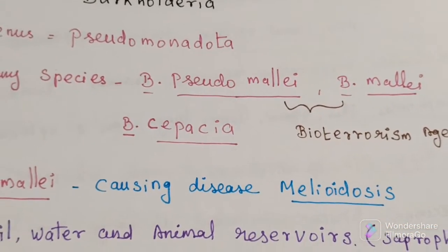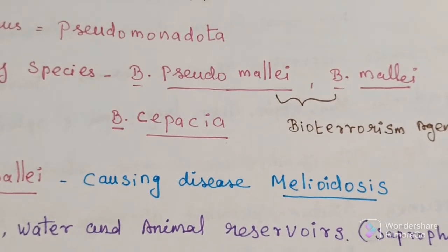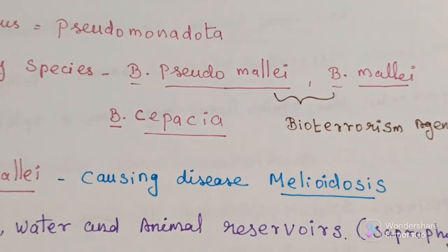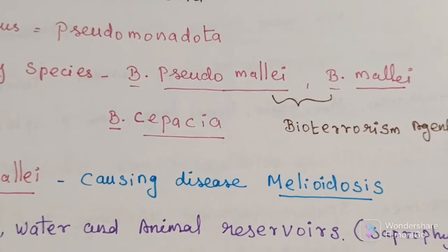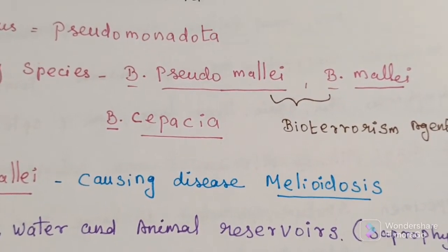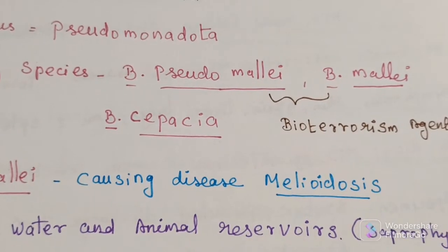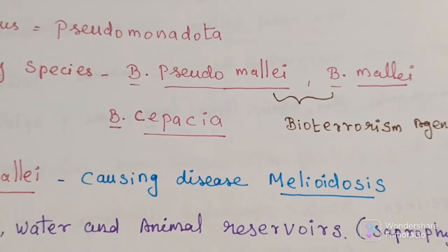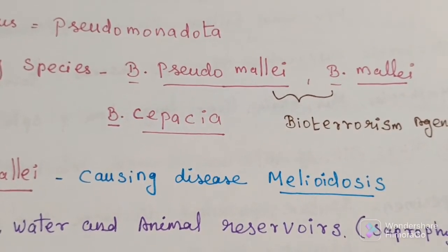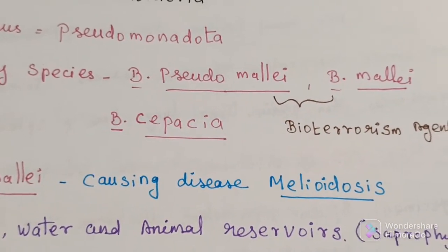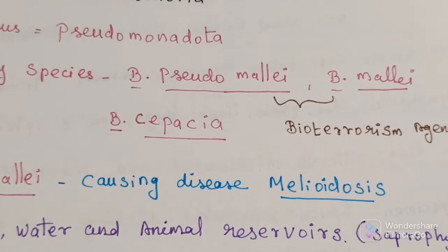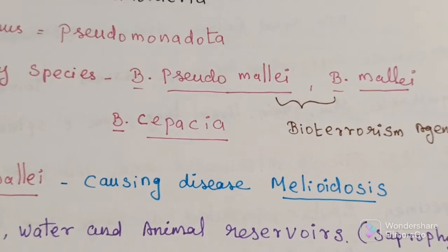The three important species are Burkholderia pseudomallei, Burkholderia mallei, and Burkholderia cepacia. These three are the most clinically significant.